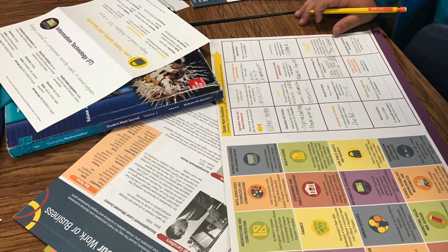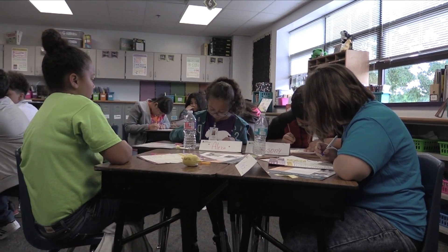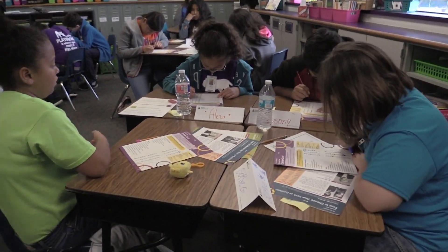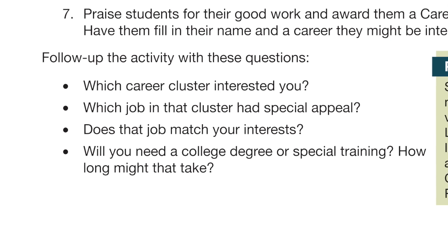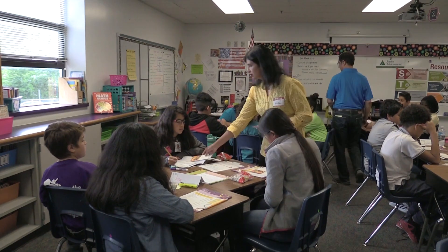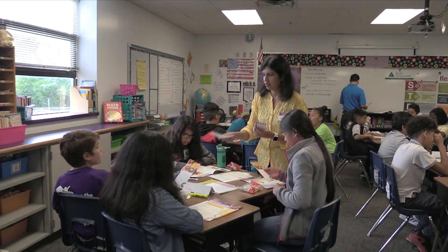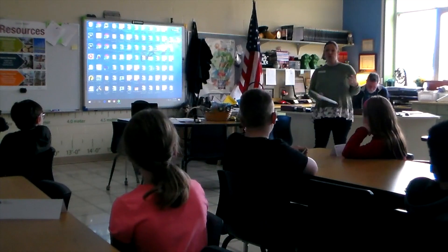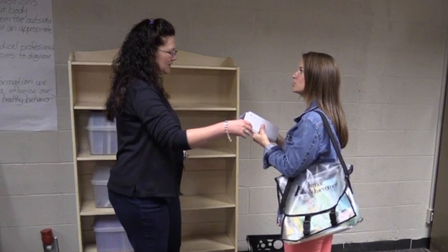Allow about 10 or 15 minutes for students to complete this activity. You and the teacher should plan to circulate around the room as students work to ensure that they stay on task. Review the answers and debrief the activity with the questions listed in your volunteer guide. Then thank the students for their good work today and distribute the career ID bookmarks. Have the students fill in their name and a career that they might be interested in pursuing. Wrap up with a brief review and then collect the table tents and posters and leave them with your teacher so that you can use them during session four.